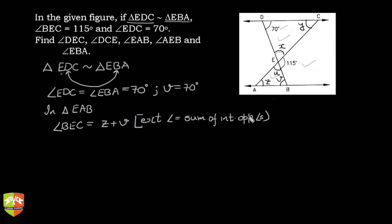Sum of interior opposite angles, right. So V we already know is 70, and BEC is given as 115. So I can write 115 degrees equals Z plus 70 degrees. Clearly angle Z is equal to 115 degrees minus 70 degrees which is 45 degrees.